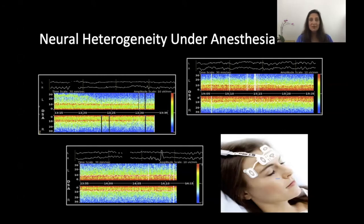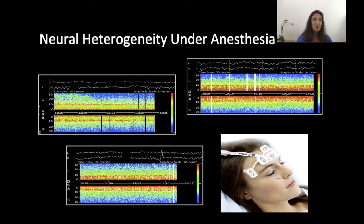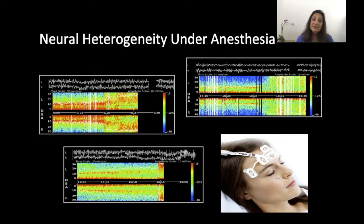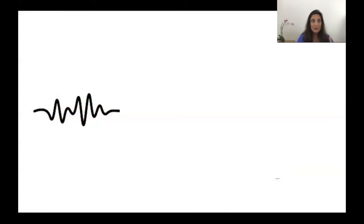It turns out that every patient's brain is a little bit different. The relative proportion of oscillations in the alpha and delta bands varies. Some of this has to do with age, but also with anesthetic drug choices — whether we're using mostly GABAergic drugs, have we added nitrous, an opiate, or ketamine. Genetics may also play a role. This variability occurs during both maintenance and emergence. Spectral analysis may therefore have limitations — it may not be brain state invariant or drug invariant, and may not reliably discriminate states of consciousness in all cases.